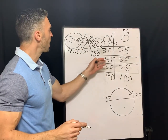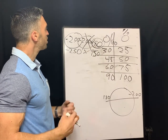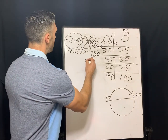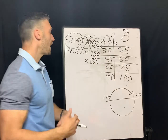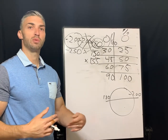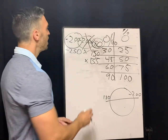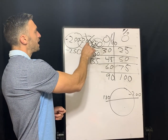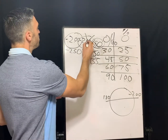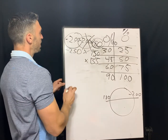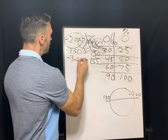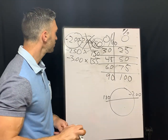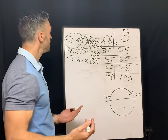Next, 45 degrees away from the prescribed axis. Forty-five degrees away from axis 180 gives us axis 135 — or we could say axis 45, since 180 is effectively zero. At 45 degrees away, 50% of the cylinder is in play. So 50% of negative 2 is negative 1, and negative 1 plus your sphere of negative 2 gives you negative 3. The power along axis 135 is negative 3.